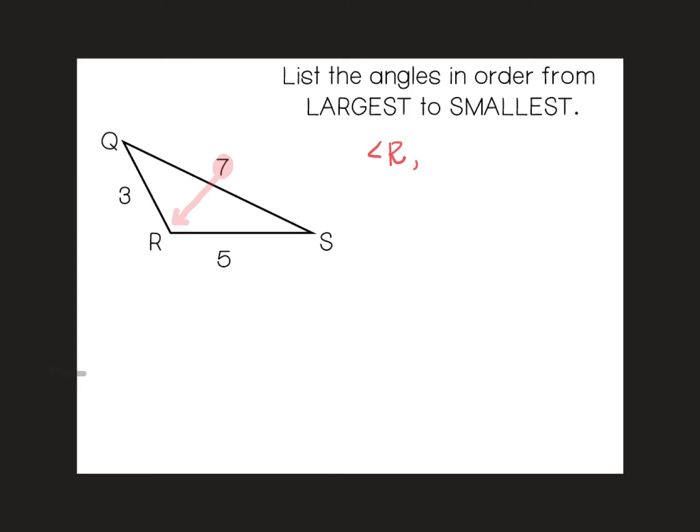Our second largest side is 5. It is opposite the second largest angle, which is Q. And then lastly, our smallest side, 3, is opposite the smallest angle, S.